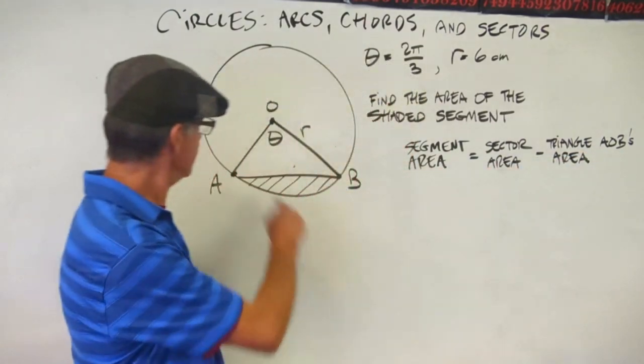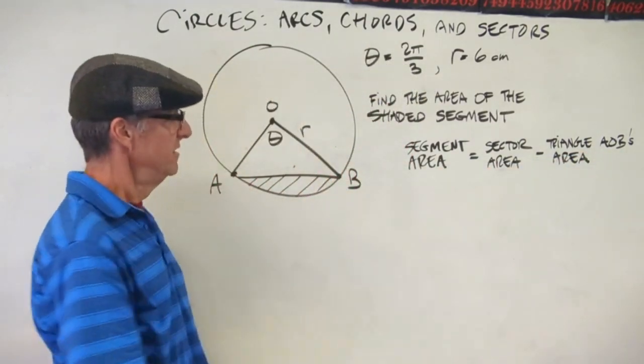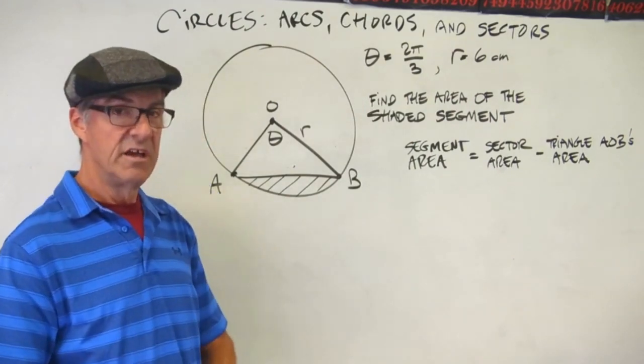This is why I wrote this general little formula here. Segment area is going to be the sector area minus the triangle's area itself. I put triangle AOB, so that's triangle AOB. So, presto, now we're there.